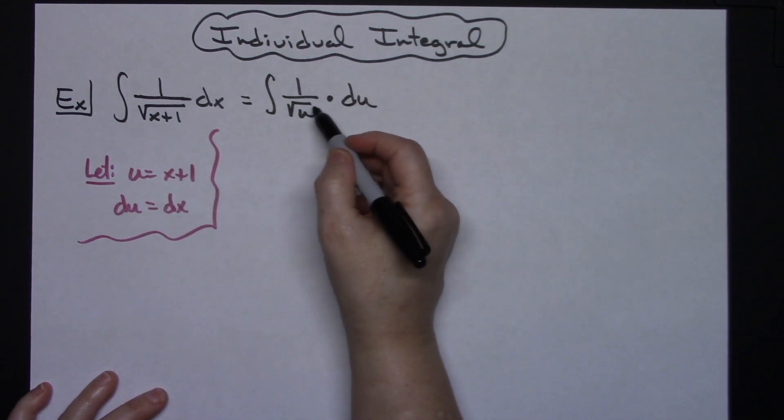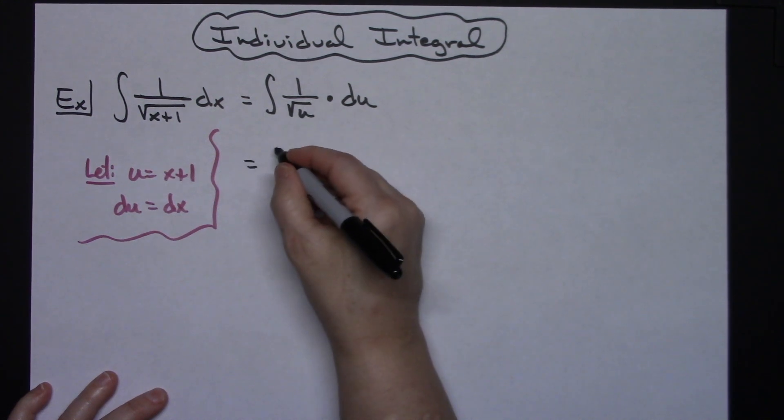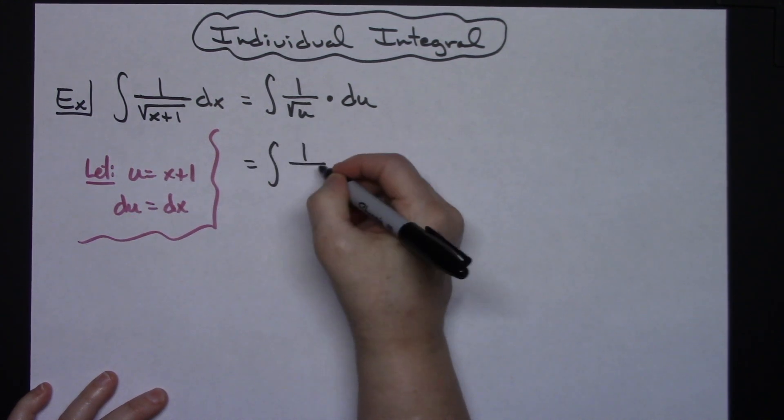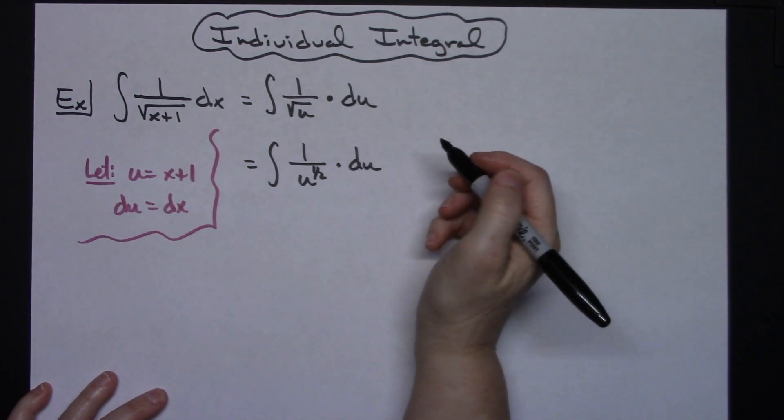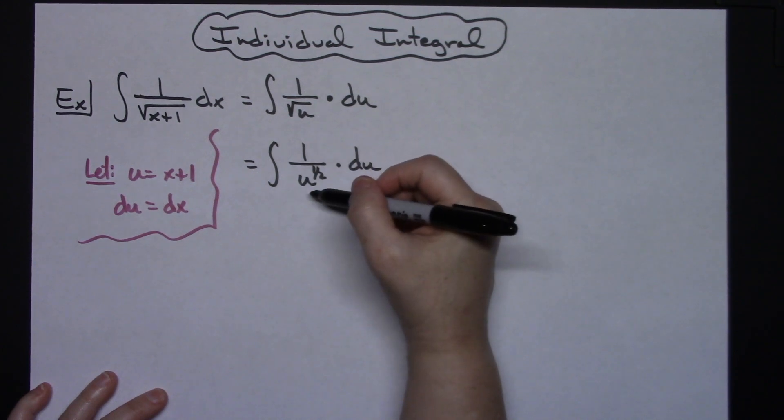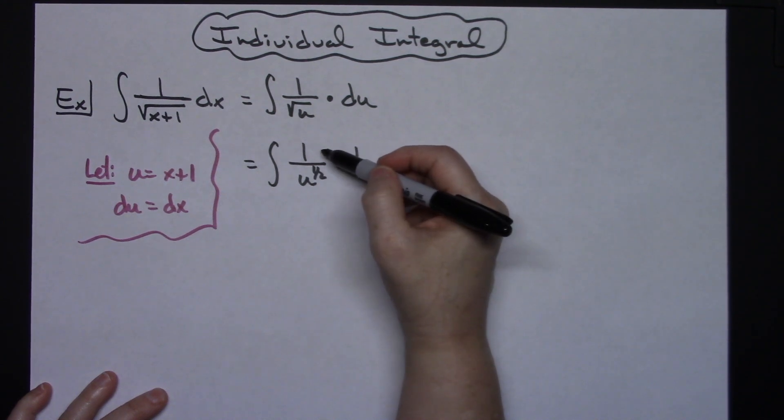Now I'm going to take this radical and write it to the 1 half power. So I'll have the integral of 1 over u to the 1 half power and then still my du. Now the easiest way to integrate this is to implement your laws of exponents, moving that u to the 1 half up and making it negative.